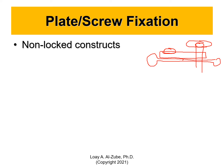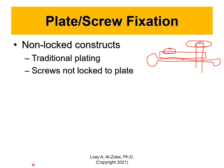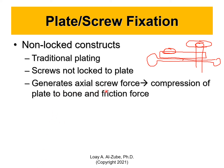So the non-locked constructs — they're traditional plating, and that's what's usually used when someone has a fractured long bone or in the spinal cord. Screws are not locked to the plate; the head is out and it generates axial screw force. Axial means along the axis of the screw. Axial screw force means there are forces going down, pushing down on the bone itself to hold it, compressing on that location in the bone.